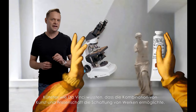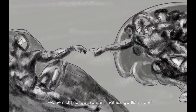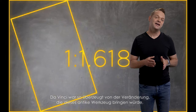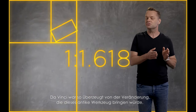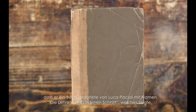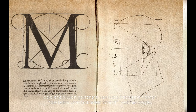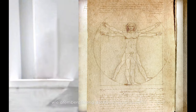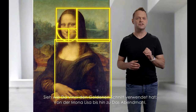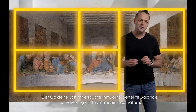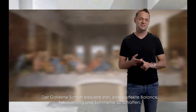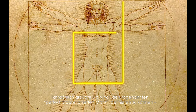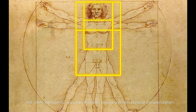Artists like da Vinci knew that combining art and science would allow design and aesthetics to go from good to divine — and the way to do that was by using the golden ratio. Da Vinci was so convinced this ancient tool was game-changing that he illustrated a book written by Luca Pacioli called The Divine Proportions, which showed just how amazing the Fibonacci sequence was. Check out how da Vinci used the golden ratio from the Mona Lisa to the Last Supper — the ratio allowed him to create perfect balance, focus, and symmetry. Da Vinci believed it defined what he called the perfect proportion of man, a ratio artists had already been using throughout history.